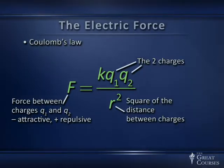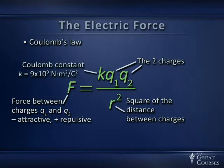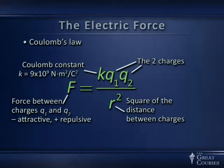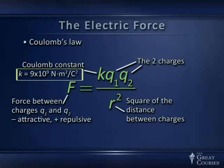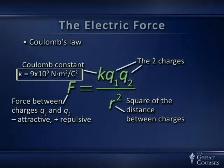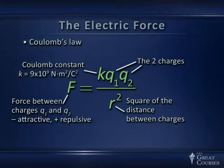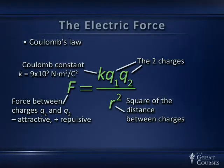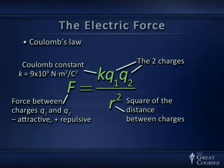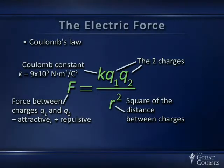Coulomb's law requires a constant. The force is proportional to the product of the two charges and inversely proportional to the square of the distance. In SI units, the constant k has the value 9 × 10⁹ Newton·meters² per coulomb². That's what's needed to cancel the coulombs from the charges and the meters² in the denominator, yielding a force in Newtons. I want to emphasize that the numerical value of the Coulomb constant is an artifact of human unit systems.